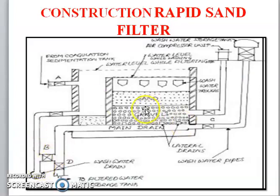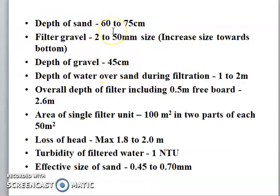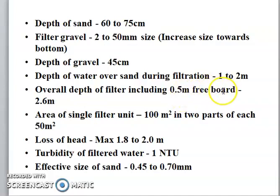Construction of the rapid sand filter: it has a sand layer, gravel layer, and an outlet with an automatic backwash washing process. Depth of sand is 60 to 75 centimeters; filter gravel is 2 to 50 mm in size; depth of gravel is 45 centimeters; depth of water over the sand during filtration is 1 to 2 meters; overall depth of filter includes 0.5 meter freeboard. Area of a single filter unit is 100 square meters, divided into 2 parts of 50 square meters each. Loss of head maximum is 1.22 meters; turbidity of filtered water is 1 NTU; effective size of sand is 0.45 to 0.70 mm.